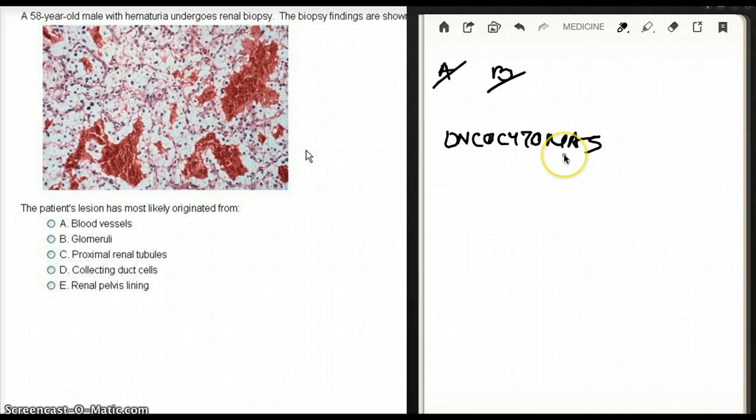And then we have renal pelvis lining. Obviously, since we talked about that it originates from PCT, it does not originate from the renal pelvis lining. The only thing is that the collecting duct, these cancers, the onchocytomas, are going to be polygonal, just like renal cell carcinoma, with lots of mitochondria. That's a distinct difference. There's going to be lots of mitochondria in onchocytomas.